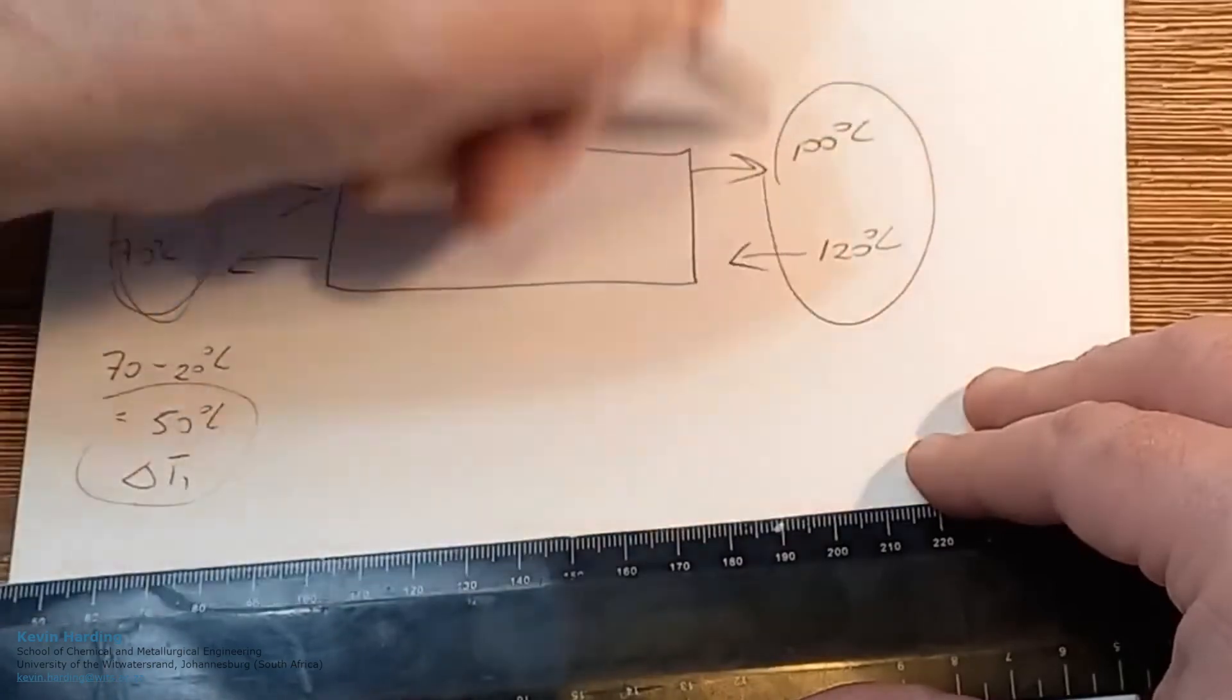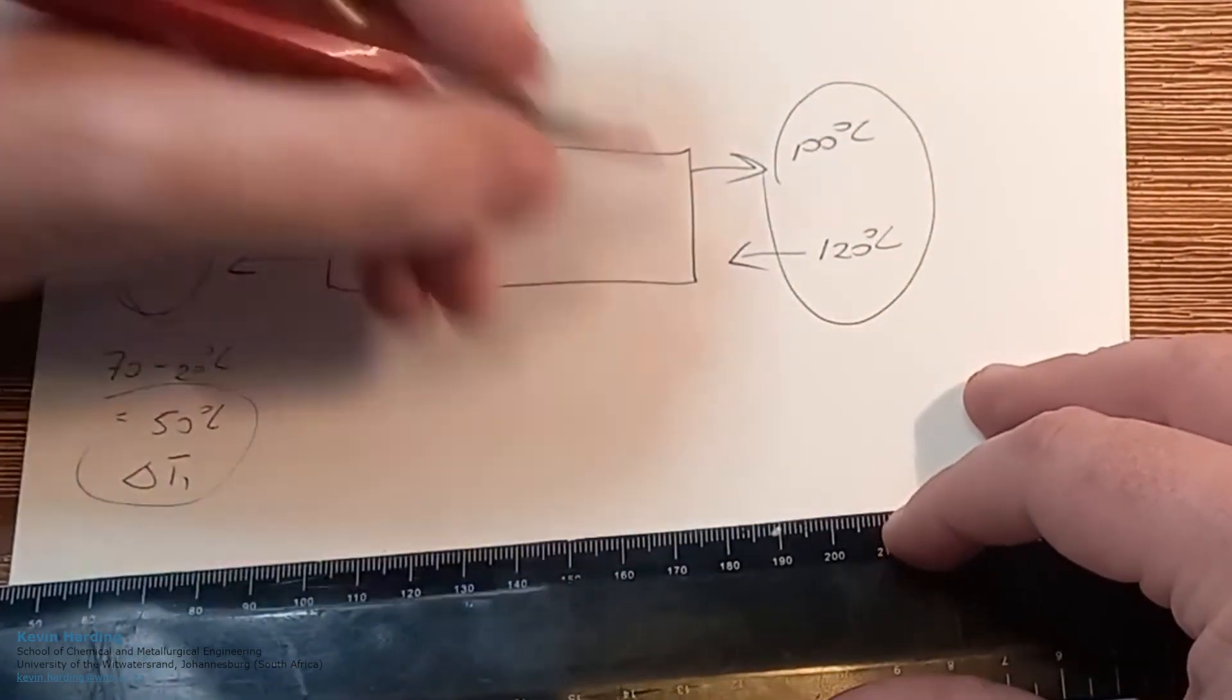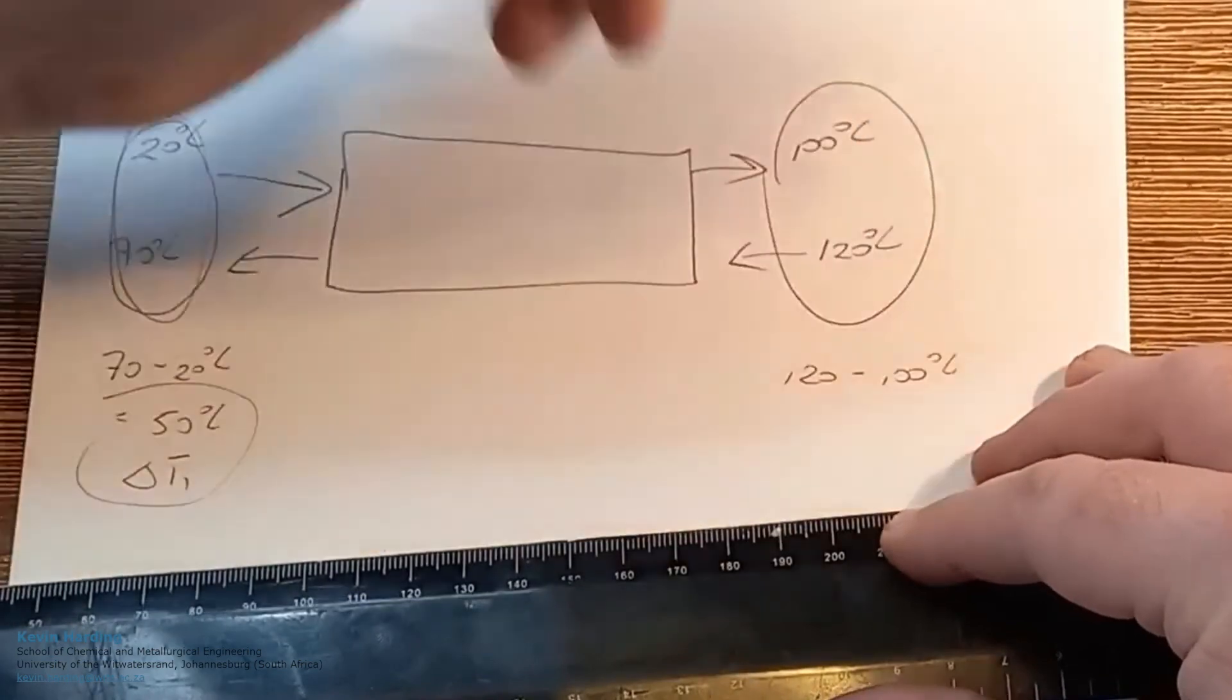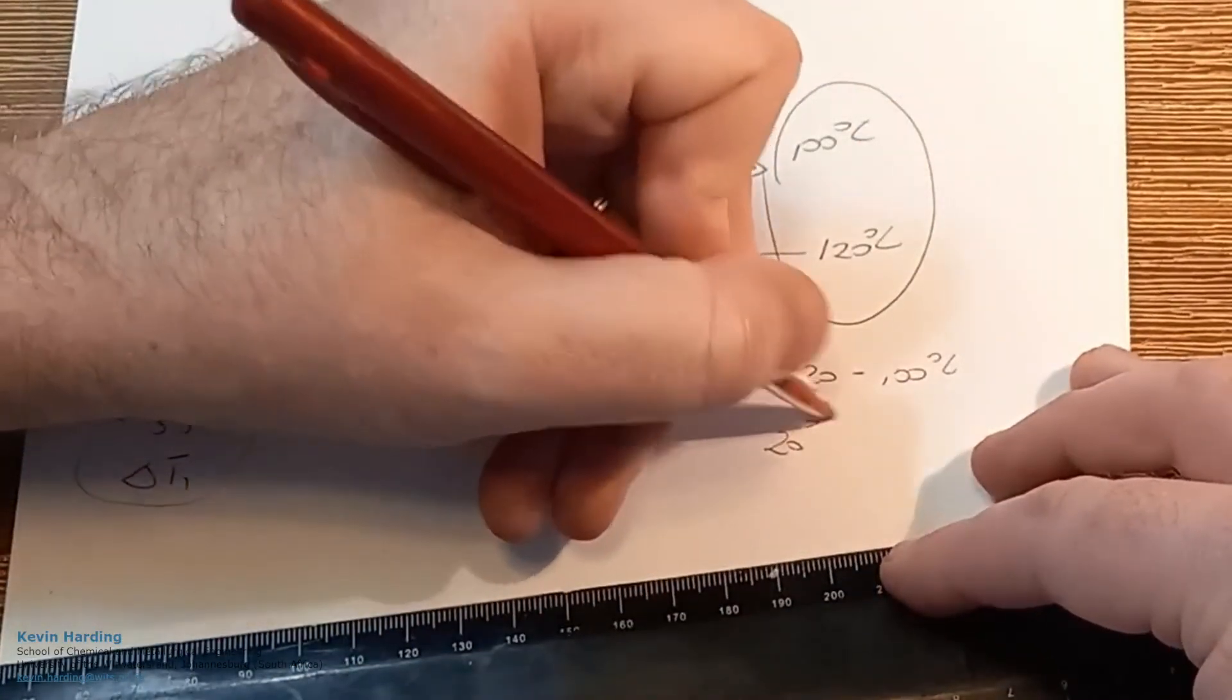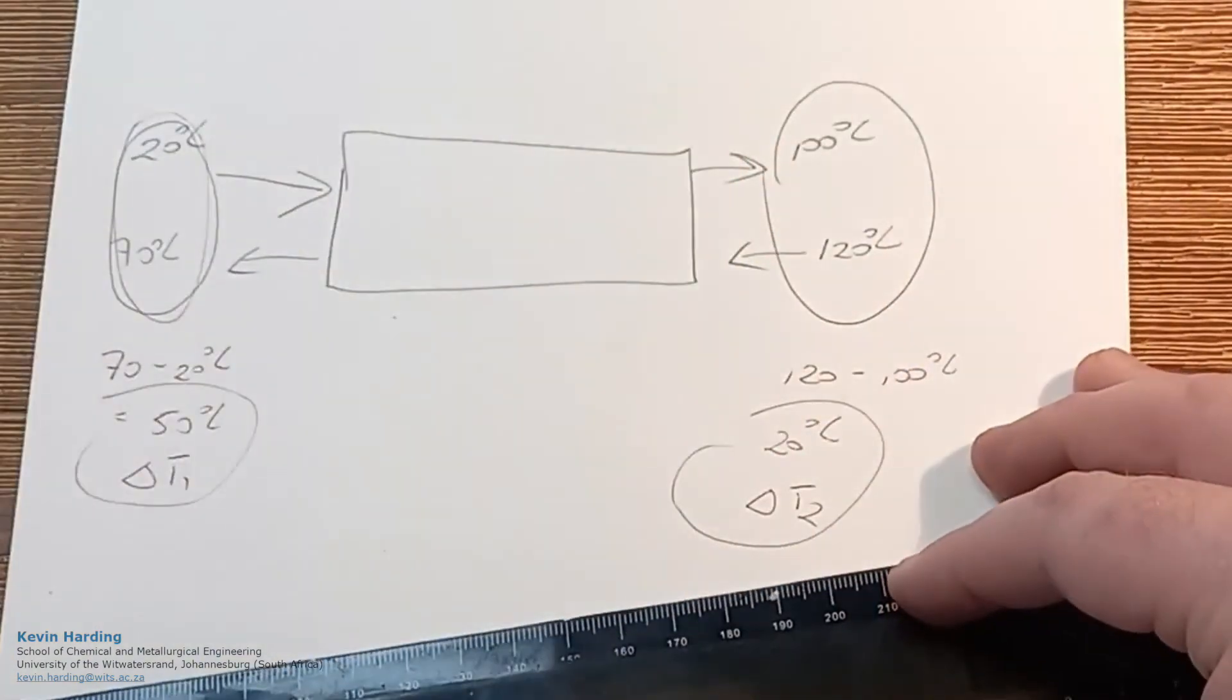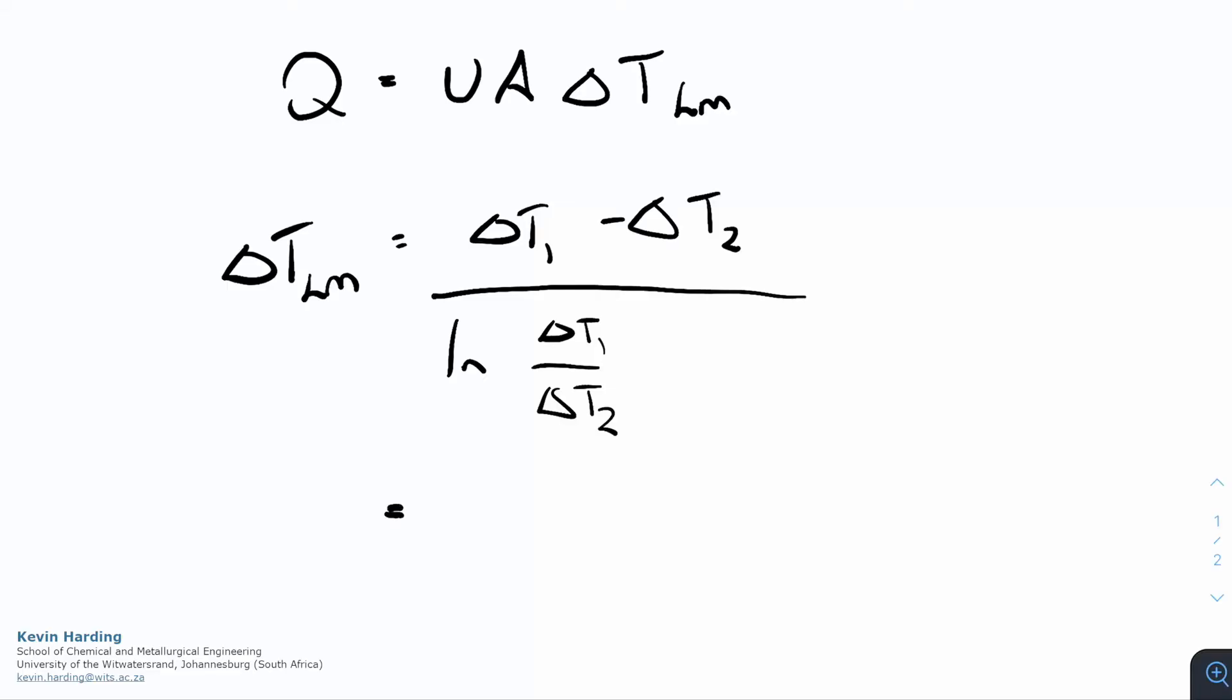And on the right hand side, we've got 100 and 120. So we've got 120 minus 100 degrees Celsius, or 20 degrees Celsius for delta T2. We can substitute these into our equations.